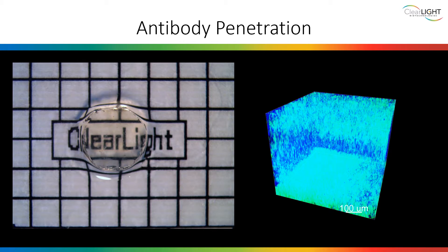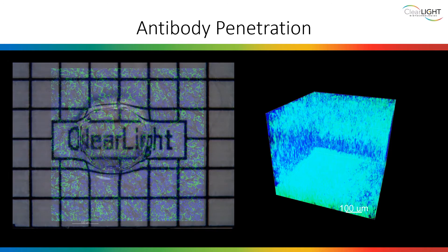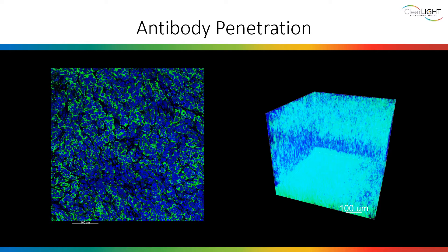ClearLight has developed expertise in antibody penetration of thick tissues. Improving the penetration rate of antibodies into thick tissues increases our ability to visualize cellular and subcellular structure. Our methodologies can achieve high signal-to-noise ratios, enabling researchers to see more biology. As an example, this mouse xenograft was immunostained using pancytokeratin (pan-CK). With CLARITY, we maintained a strong pan-CK signal along with DAPI signaling, which is very apparent in the 2D slice view. Researchers should not have to make concessions while exploring the tissue microenvironment.